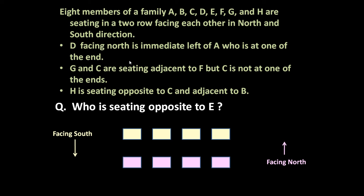Let us go statement by statement. D facing north is immediately left of A, who is at one of the ends. So A is at one end and D is facing north. D is facing north and immediately left of A. A cannot be at this end — if A is at this end, then left will be inside, which is not possible because A is at the end and D is on the left of A. So A can be on this corner, and since D is facing north, only this combination is possible.